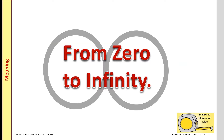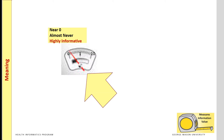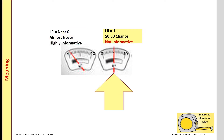The ratio can be anywhere from zero to infinity. A value of zero indicates that patients who have this predictor never have the dependent variable — so zero is in fact very informative, but in the negative direction. A ratio near zero indicates that the dependent variable will almost never happen. A ratio of one indicates that the predictor is not informative, and there is a 50-50 chance that the dependent variable will occur.